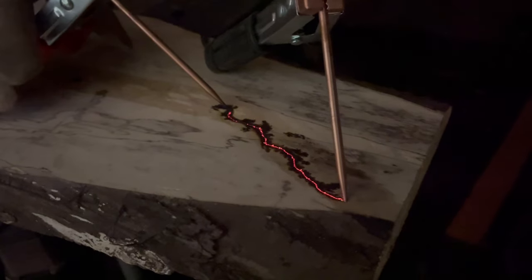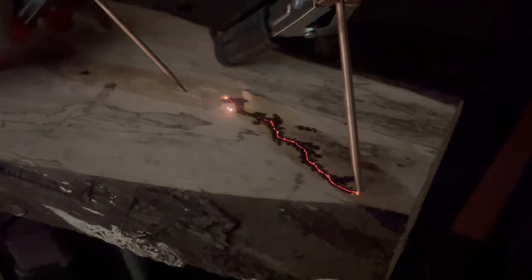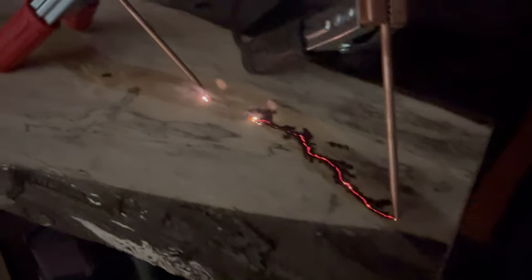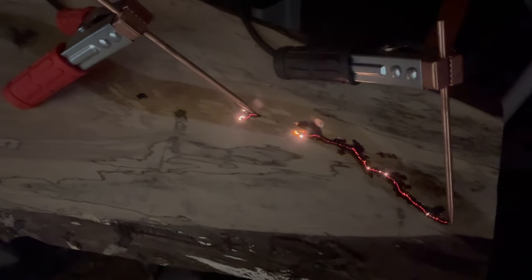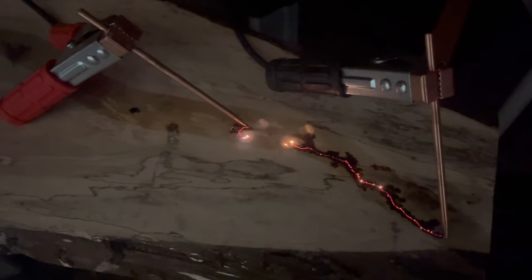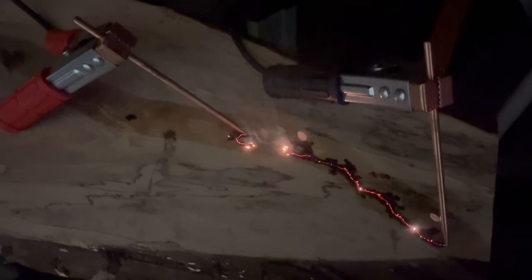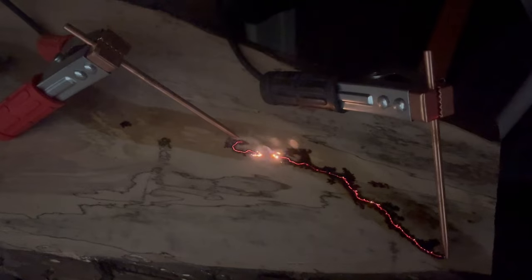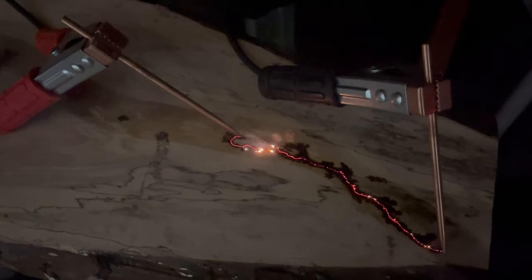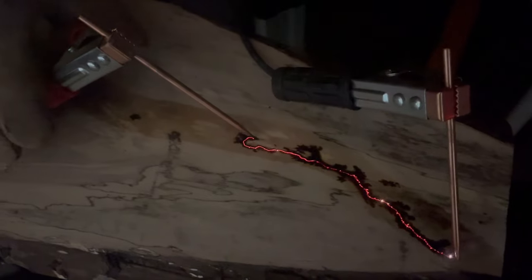Once the electricity meets the rods, we just take and move one of the rods a little further down the board. You can move it further than what we did, but we're trying to get more of a controlled line here. The further you move it away, the more it spreads out on its own and goes its own way. We were really looking for a specific path here, so we just did it in little short increments, moving it down the board.